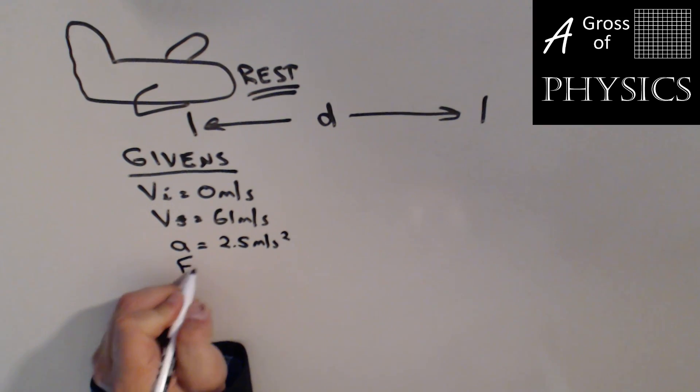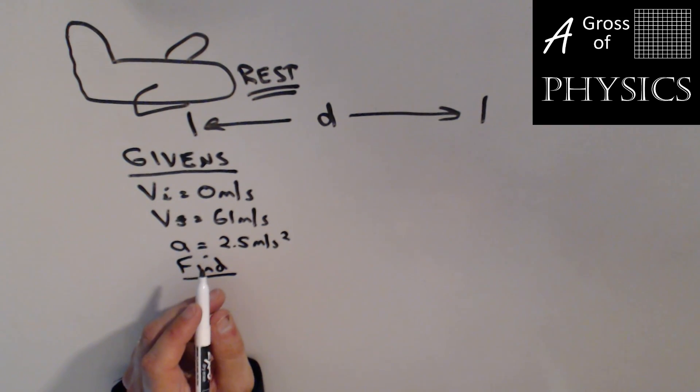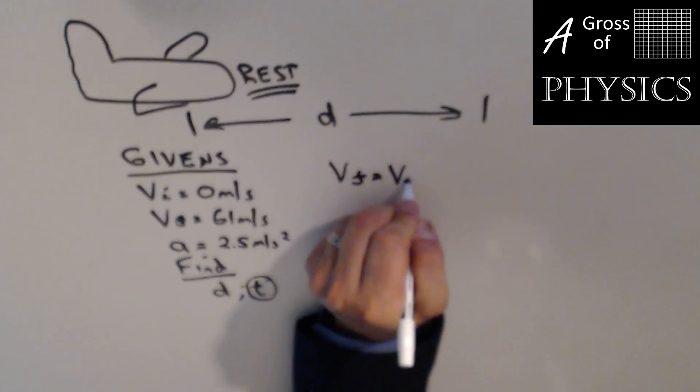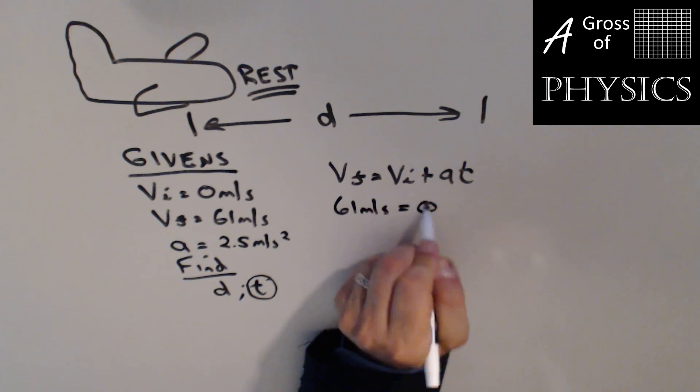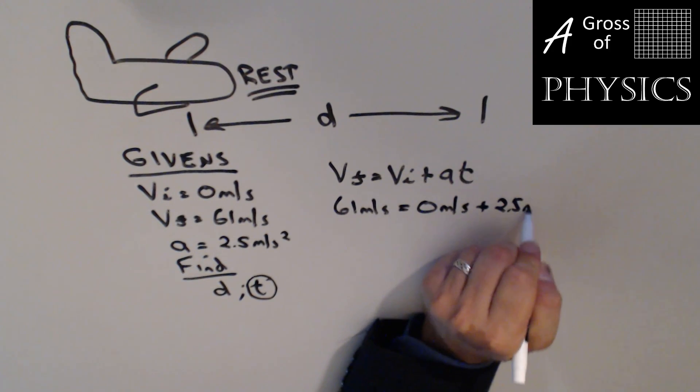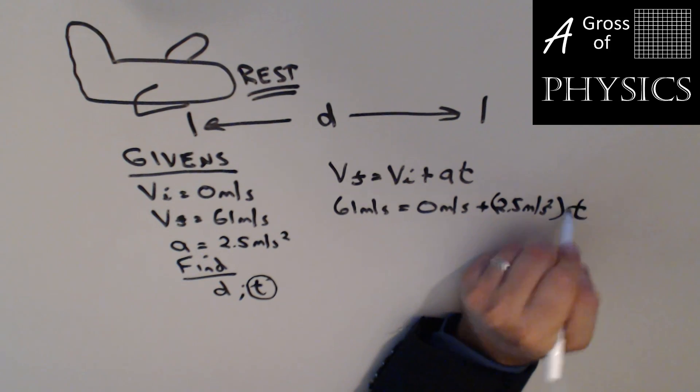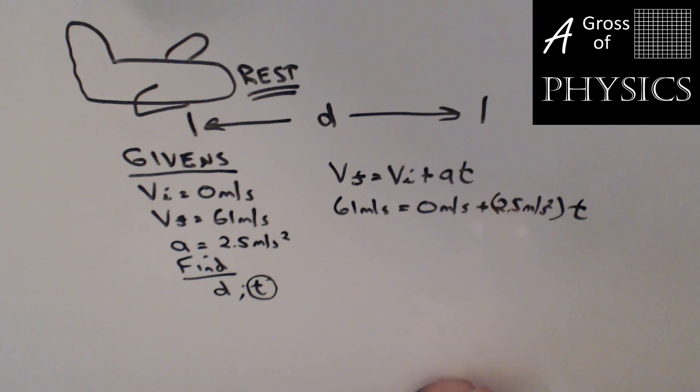And we're looking for two things. We want to find how long must the runway be built, so that's the distance. And also how many seconds will it take the plane to reach takeoff speed, which is t. We can actually choose which one we solve for first. The t can be found using equation 3. Vf equals vi plus at. We know Vf is 61. We know zero is vi. We know a is 2.5 meters per second squared. And t is our unknown. So we know everything but the t. In order to solve this, I'm going to type in 61 and divide it by 2.5. And we should get 24.4 seconds.